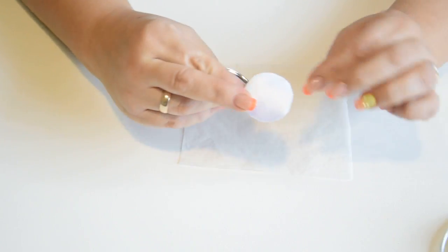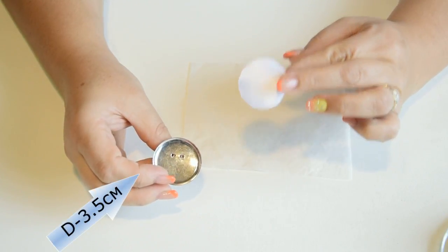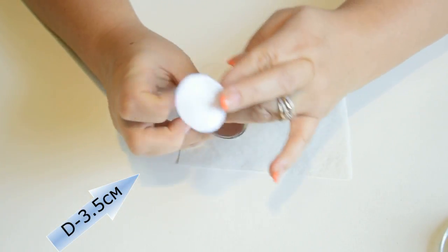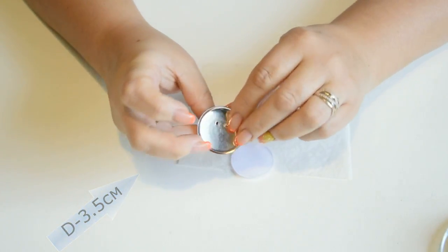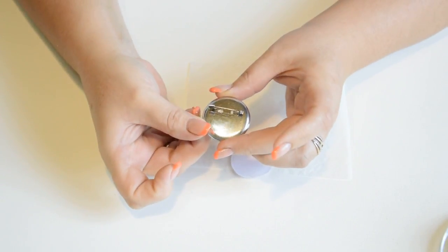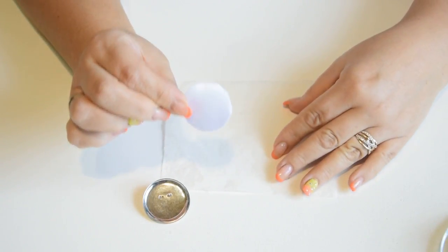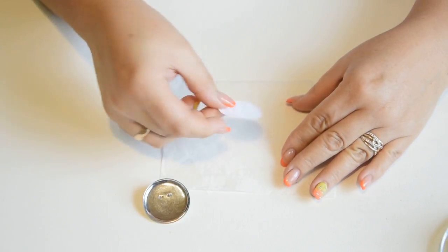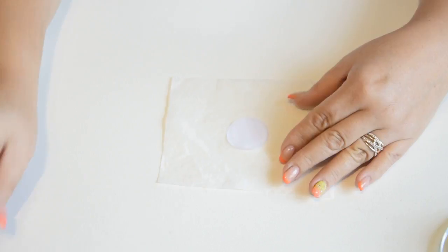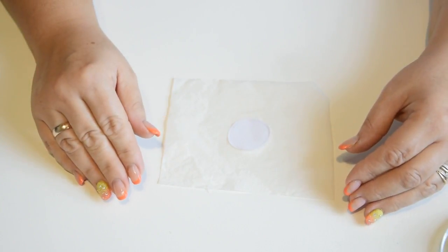Next, cut a circle from satin ribbon with diameter equal to our brooch base. My brooch base is 3.5 cm, so my circle is 3.5 cm diameter. We'll glue our petals onto it.